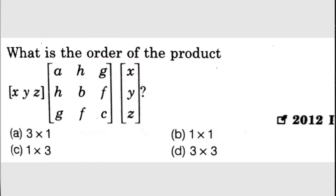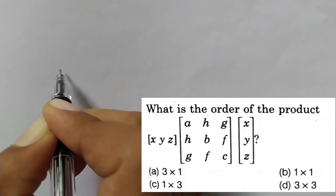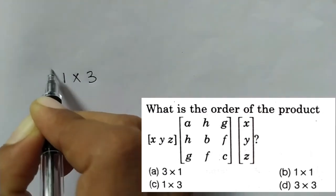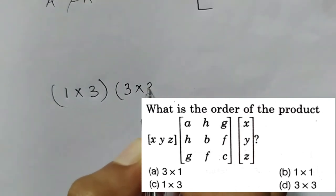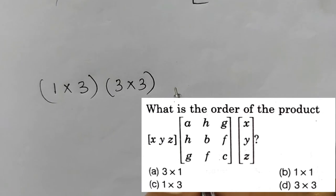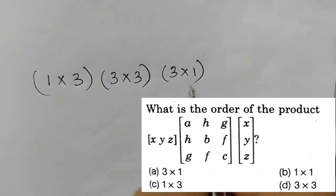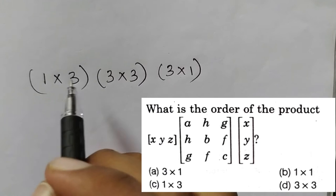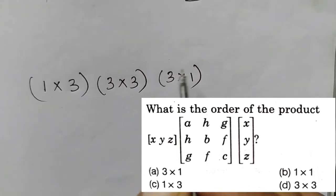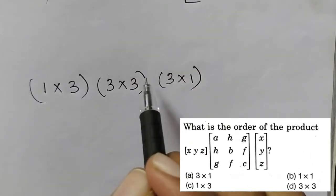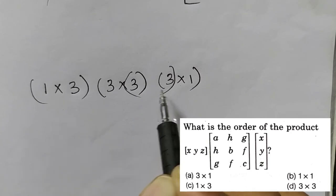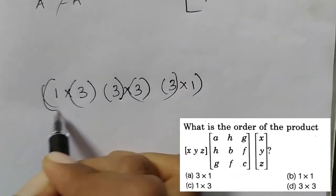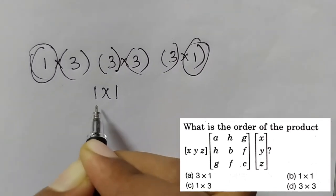Let's check the next question. We have a matrix with x, y, z — a 3 by 1 matrix. We need to find the order of the product. We cancel the inner dimensions and the result is a 1 by 1 order of product.